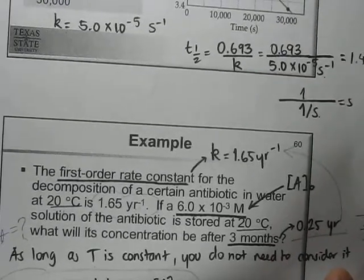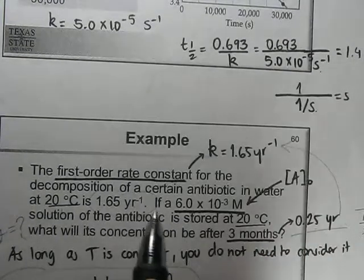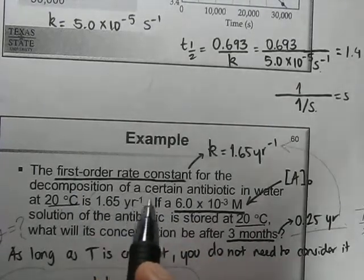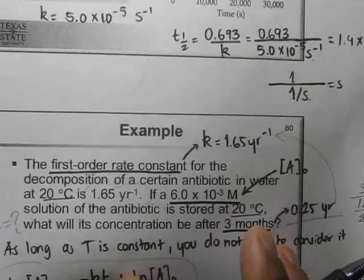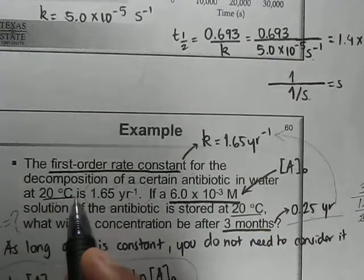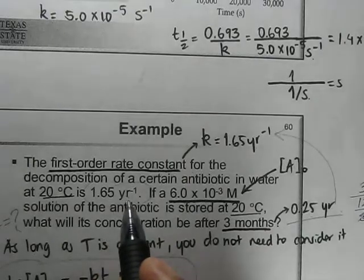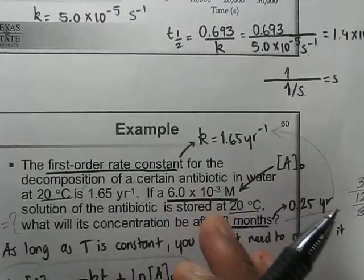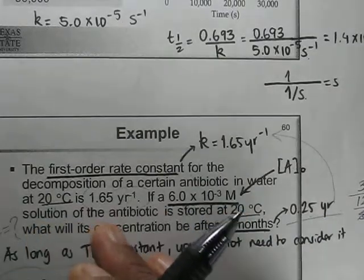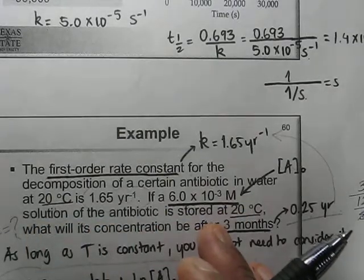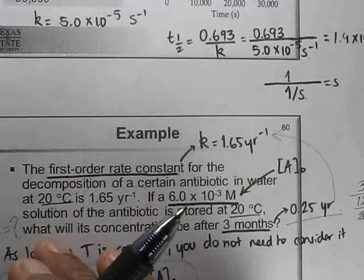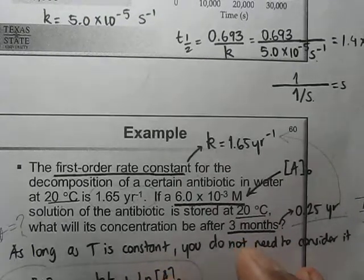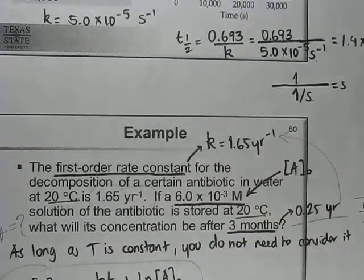Let's take one more example. The first order rate constant for the decomposition of a certain antibiotic in water at 20°C is 1.65 yr⁻¹. If a 6.0×10⁻³ molar solution of antibiotic is stored at 20°C, what will the concentration be after three months?